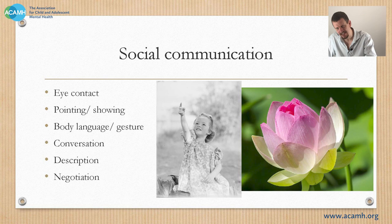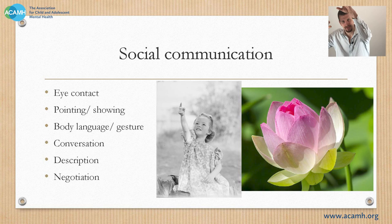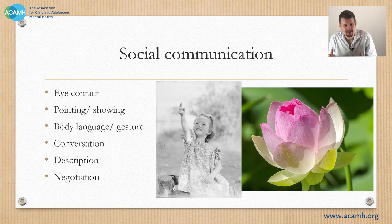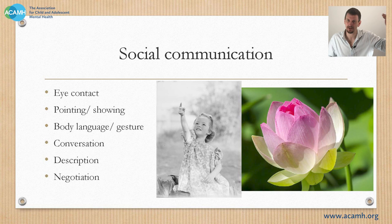Conversation also develops over time. Two-year-olds playing together and using scribble talk are already having a kind of conversation — the mark of a conversation is that you are listening to the other person and then putting something in that's relevant. Conversation is not about what words you're using; it's about the intent and the dance of building something together. This is a big deficit particularly in more able children and young people on the autistic spectrum — they can't build that stuff together because they often don't understand what the other person is getting at.